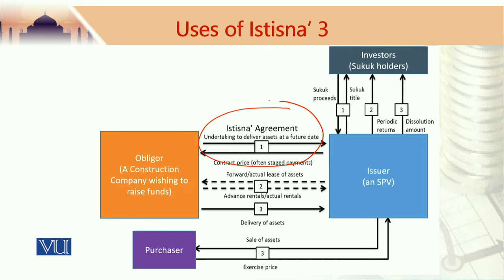Obligor, in Sukuk structures — for your benefit, as many of you might not be aware of investment jargon — the obligor is a party which is looking for financing. This party could be a construction company, a property developer, or an investment company that is looking for financing to undertake a construction project. This party, the obligor looking for money, arranges for the setting up of an SPV.